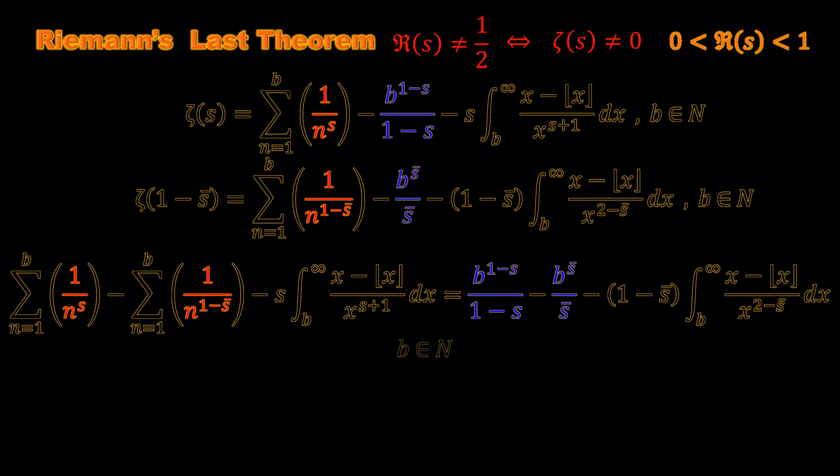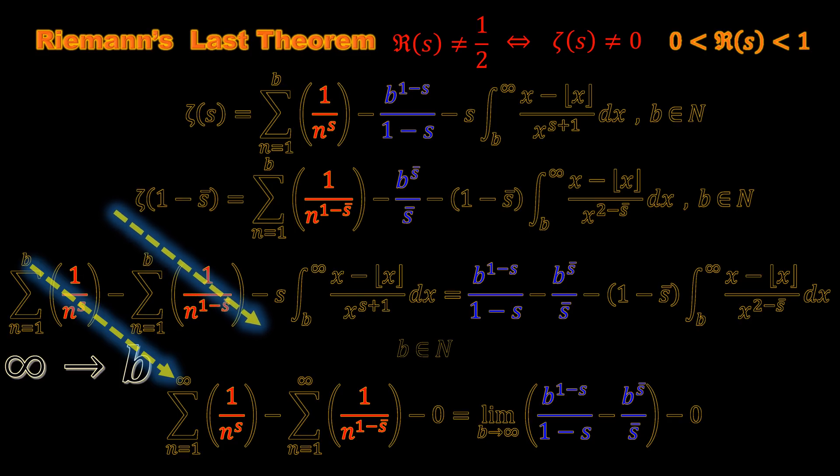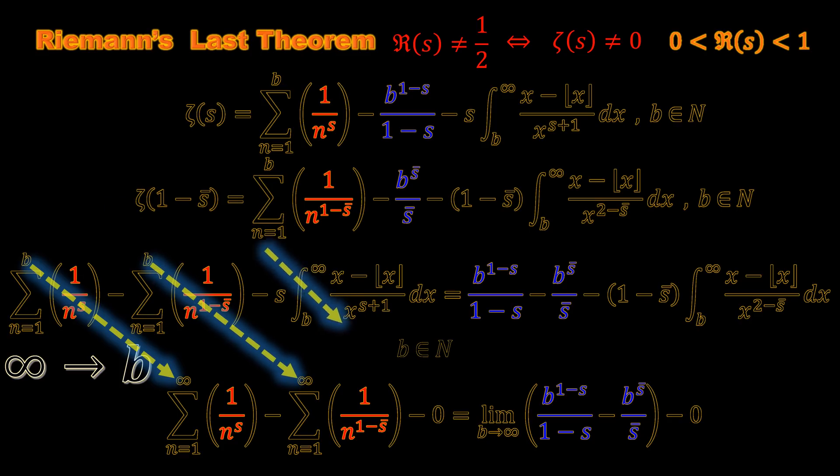Now we can remove this and push b to infinity, or take a limit of b to infinity. The first term becomes this, the second term becomes this, this integral becomes zero.